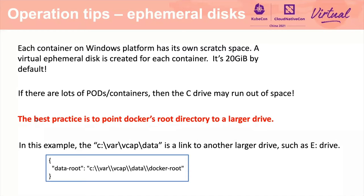The best practice is to configure the container runtime's root directory on a larger drive, such as the D drive. In this example, the C drive path is a symlink to another larger drive such as the D drive. The target drive may change, but the soft link will always be the same path.